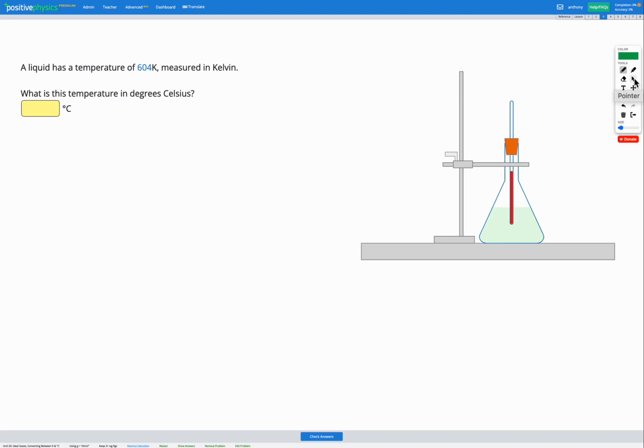In this skill, we're going to be converting between two different scales for temperature: Kelvin and degrees C.